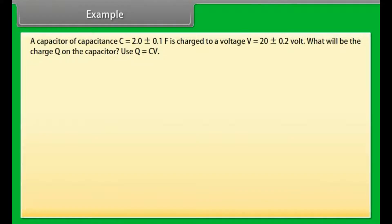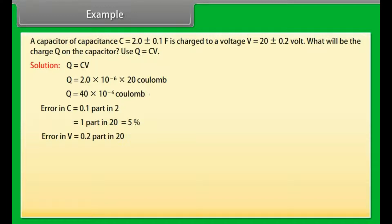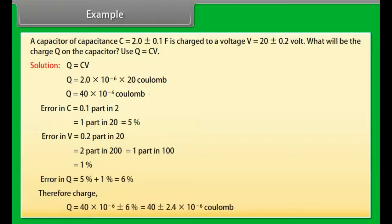Example. Let's take an example of errors. A capacitor of capacitance C = 2.0 ± 0.1 microfarad is charged to a voltage V = 20 ± 0.2 volt. What will be the charge Q on the capacitor? Use Q = CV. Let us see the solution: Q = CV. On calculating we get Q = 40 × 10^-6 coulomb. Error in C = 0.1 part in 2 = 5%. Error in V = 0.2 part in 20 = 1%. Error in Q = 5% + 1% = 6%. Therefore charge Q = 40 ± 2.4 × 10^-6 coulomb.